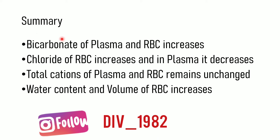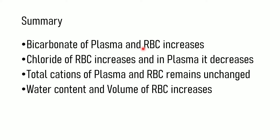To summarize: the bicarbonate ions formed in the RBC are not transported by the RBC but instead by plasma. The bicarbonate ions move out from the RBC to the plasma, increasing the level of bicarbonate ions in the plasma. In order to equalize the number of bicarbonate ions that have left the RBC, an equal amount of chloride ions enter into the RBC, thus increasing the level of chloride ions inside the RBC while decreasing them in the plasma.